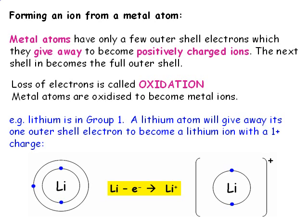Here's a lithium atom with one outer shell electron. Once it's given away this electron, it becomes a lithium ion. The outer shell is now empty, and so we can show the next shell in as the new, filled outer shell. Having lost one negatively charged electron, the lithium ion has an overall charge of 1+. Notice that the charge is the same as the valency.